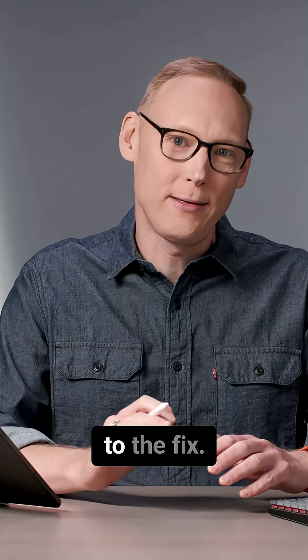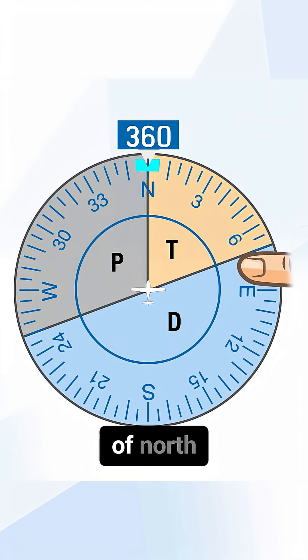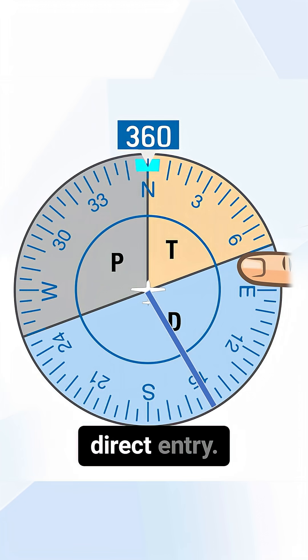So for example, in a standard right hand pattern, if we are arriving at the holding fix on a heading of north and our holding course was 150, then we would execute a direct entry.